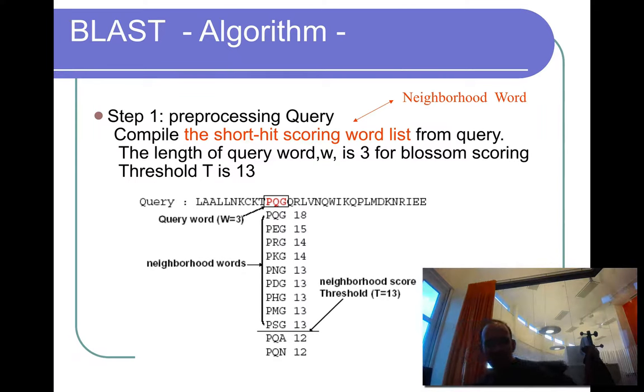So the first thing you're looking for is finding this. So if you for instance want to find something that is similar to this PQG, you have a number of neighborhood words. Basically PQG identically is very similar. However, PEG is also similar, and basically P and many other central residues are very similar when glutamine and glycine are conserved.